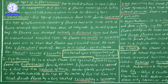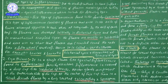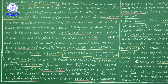In cyathium, the inflorescence is covered by a deep cup-like structure formed by an involucre of bracts. This involucre of bracts forms the cup-like structure. Within the cup-like structure, the inflorescence is present. On the outer side of the cup, nectar glands are also present.